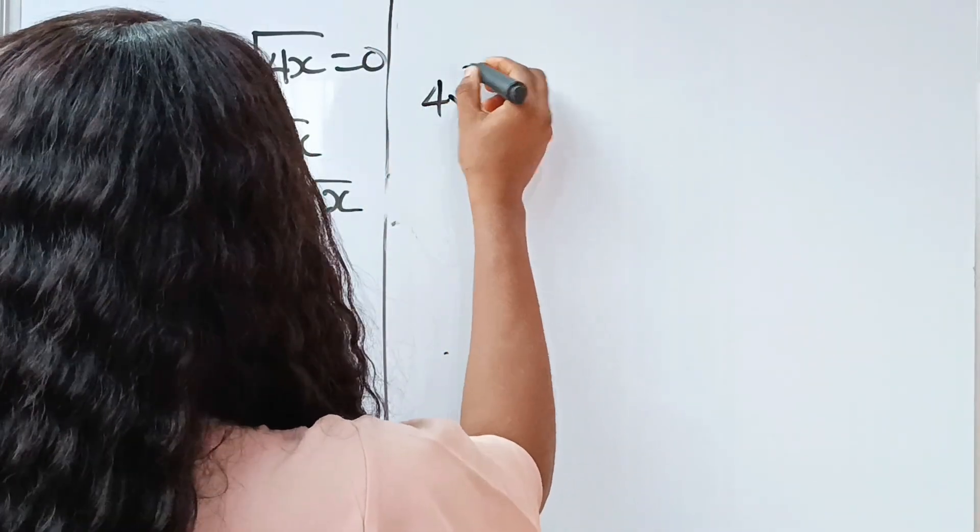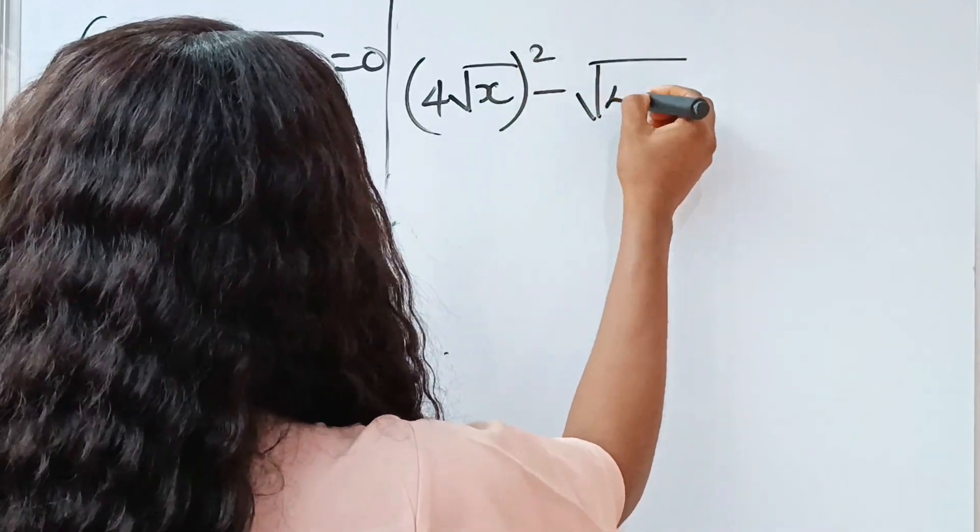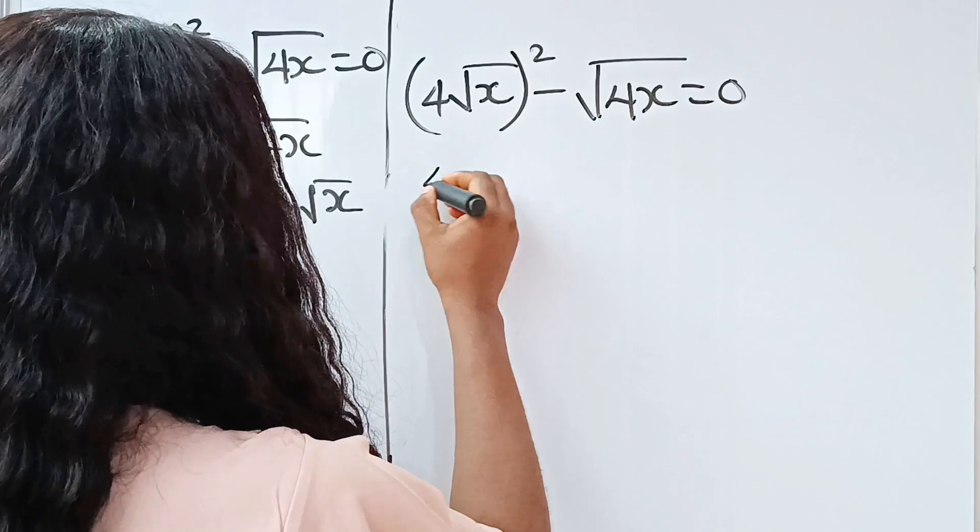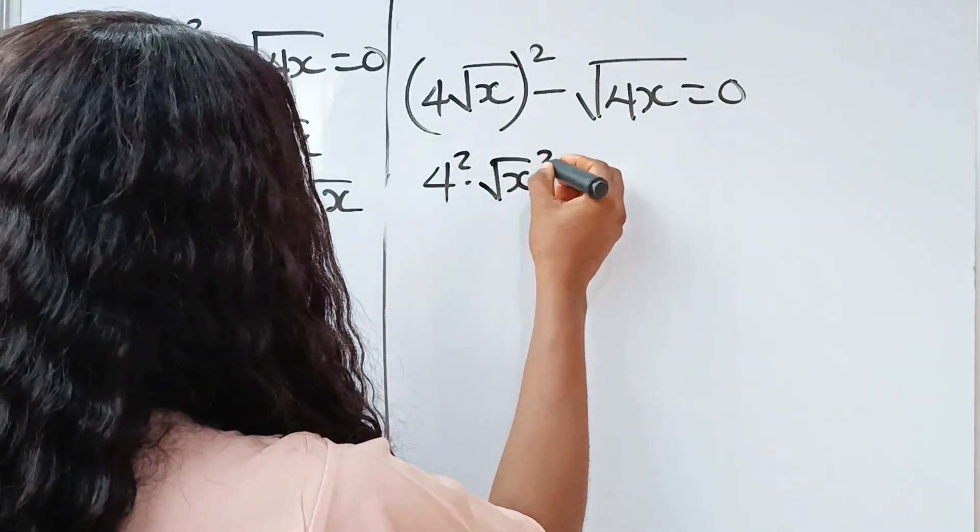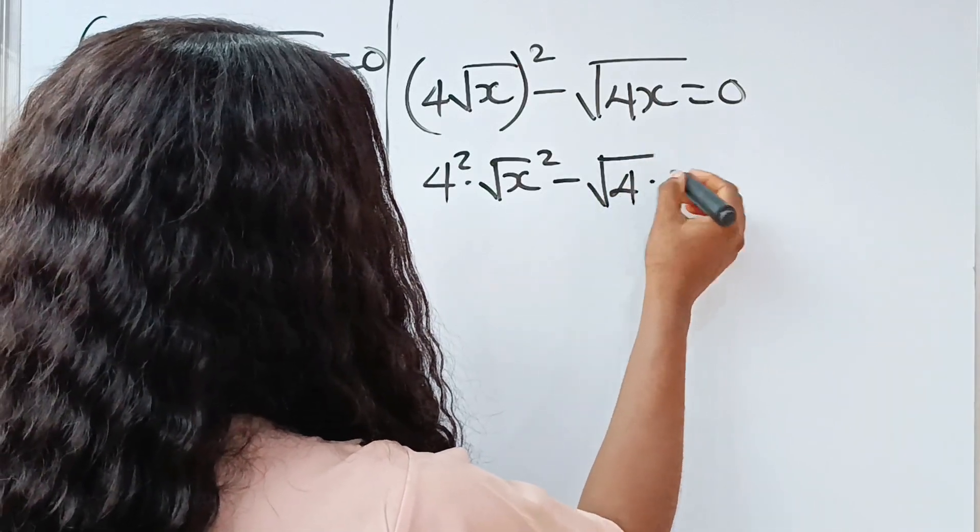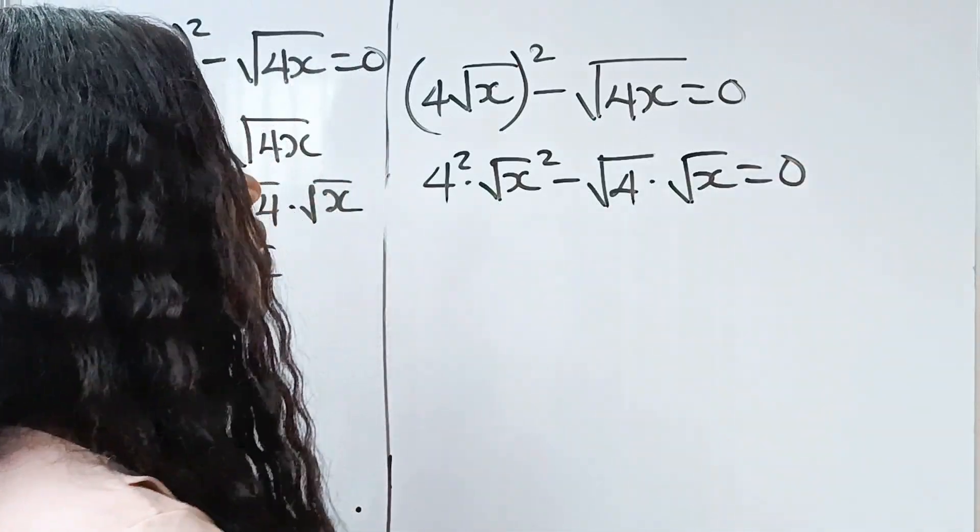Now, the equation says 4 root x squared minus square root of 4x is equal to 0. So, what we have here is 4 squared multiplied by root x squared, minus square root of 4 multiplied by square root of x is equal to 0.